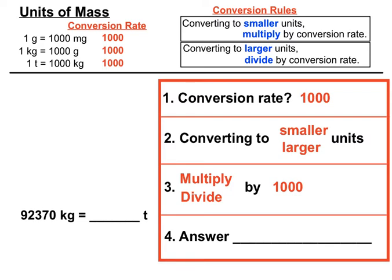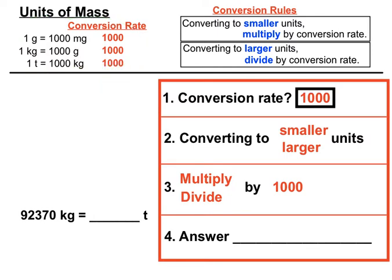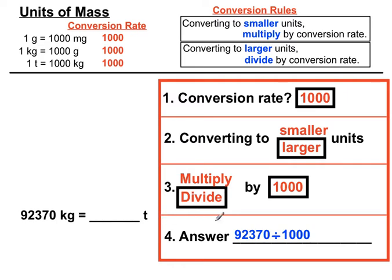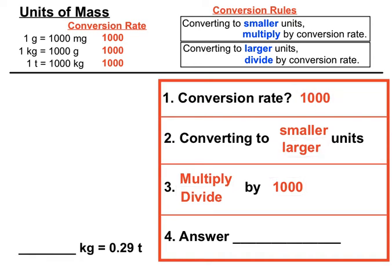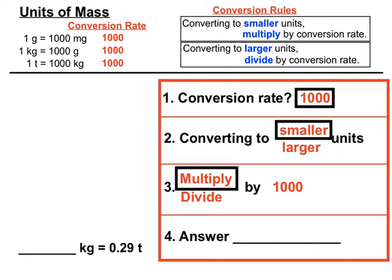The conversion rate between kilograms and tons is a thousand, as it is for all of them. Tons are larger units, so we're dividing by a thousand. Moving the decimal point three places gives us 92.37 tons — we don't need to write trailing zeros at the end of decimals. Going from tons to kilograms: conversion rate is a thousand, kilograms are smaller than tons, so we multiply by a thousand. Moving the decimal point three places to the right gives us 290 kilograms from 0.29 tons.